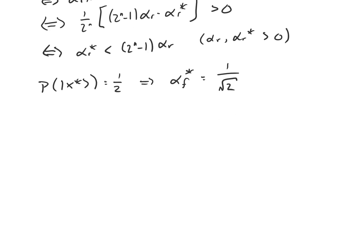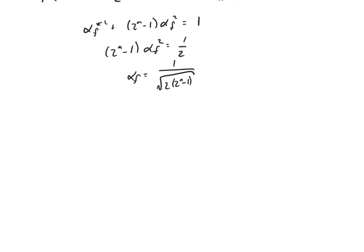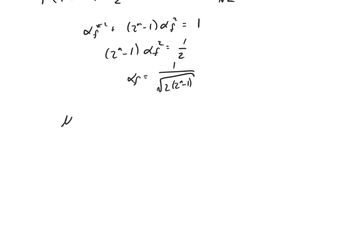Because the state vector is always normalized, we can figure out what alpha sub f is. The normalization condition is alpha sub f star squared plus 2^n minus 1 times alpha sub f squared equals 1. That means 2^n minus 1 times alpha sub f squared equals 1/2, since alpha sub f star squared equals 1/2. So alpha sub f equals 1 over root(2 times 2^n minus 1). Now that we know both alpha sub f star and alpha sub f, we can compute mu sub f. Mu sub f equals 1 over 2^n times negative alpha sub f star, which is negative 1/√2, plus 2^n minus 1 times alpha sub f, which is 1 over root(2 times 2^n minus 1).